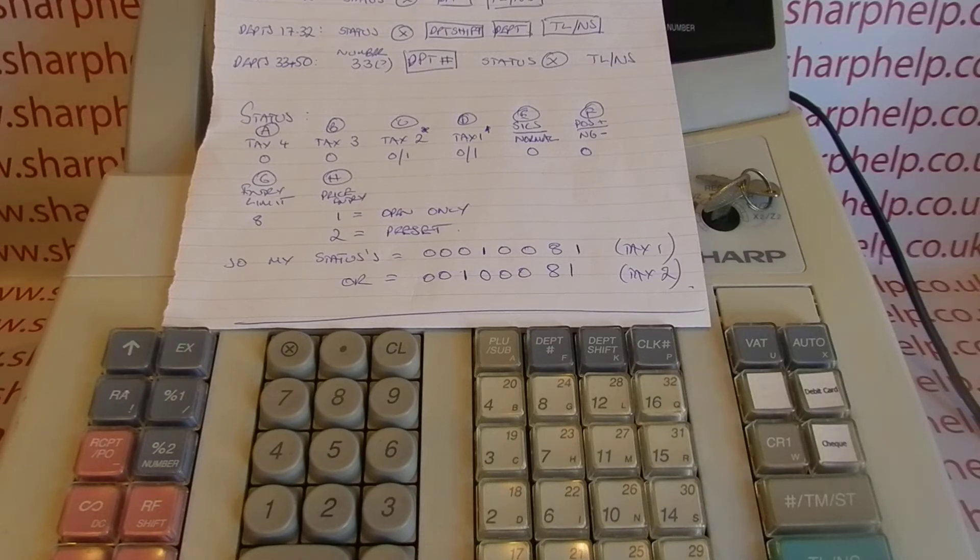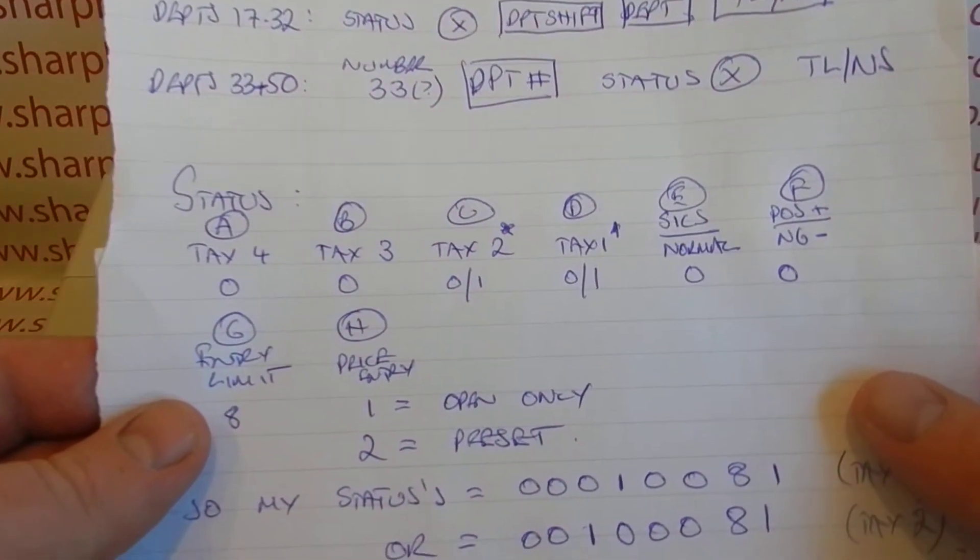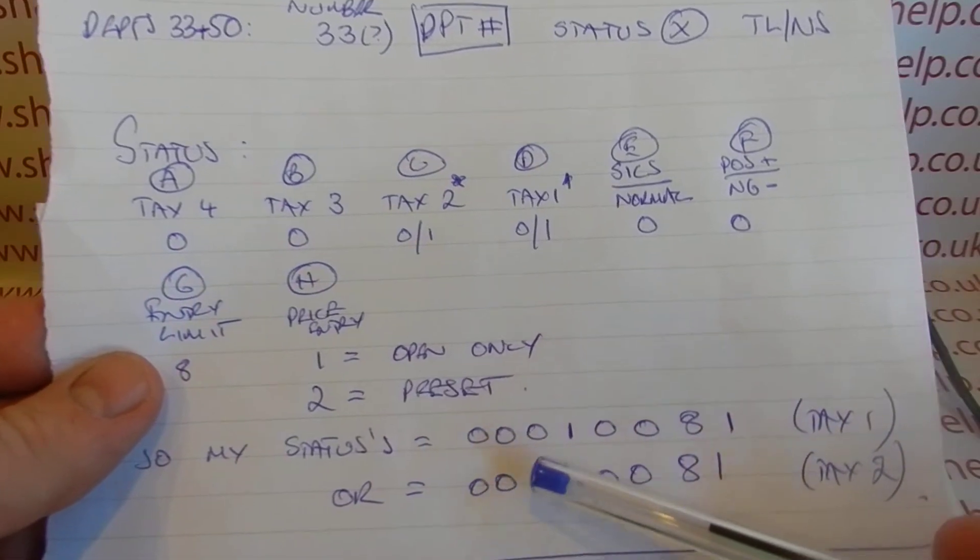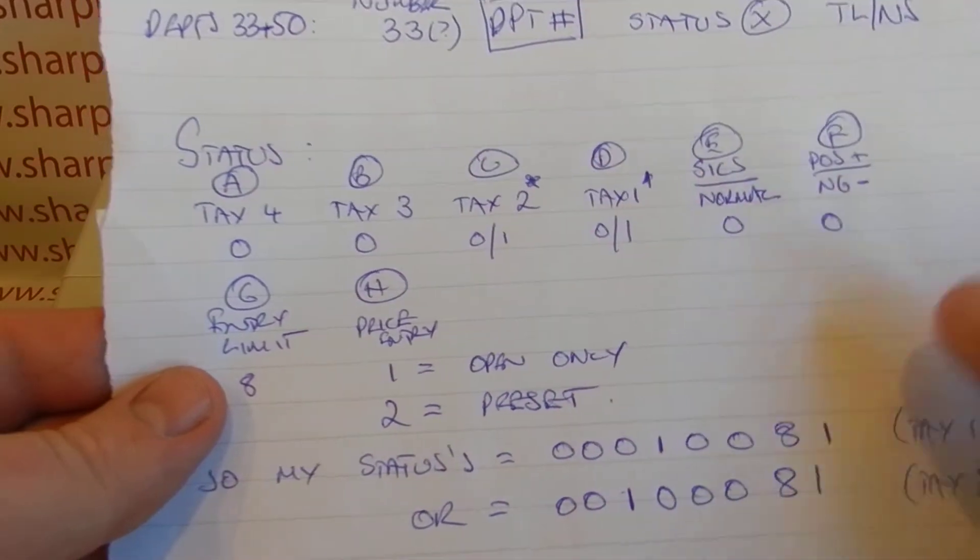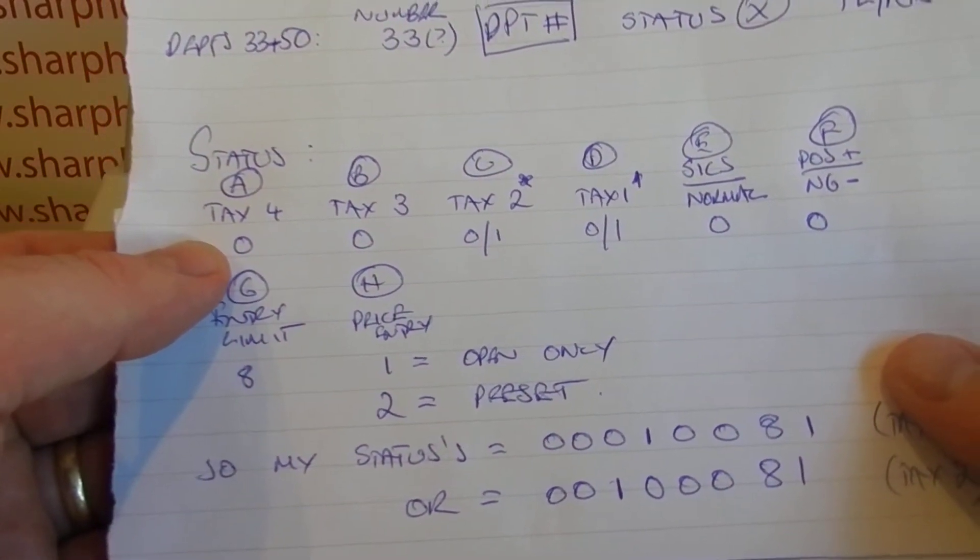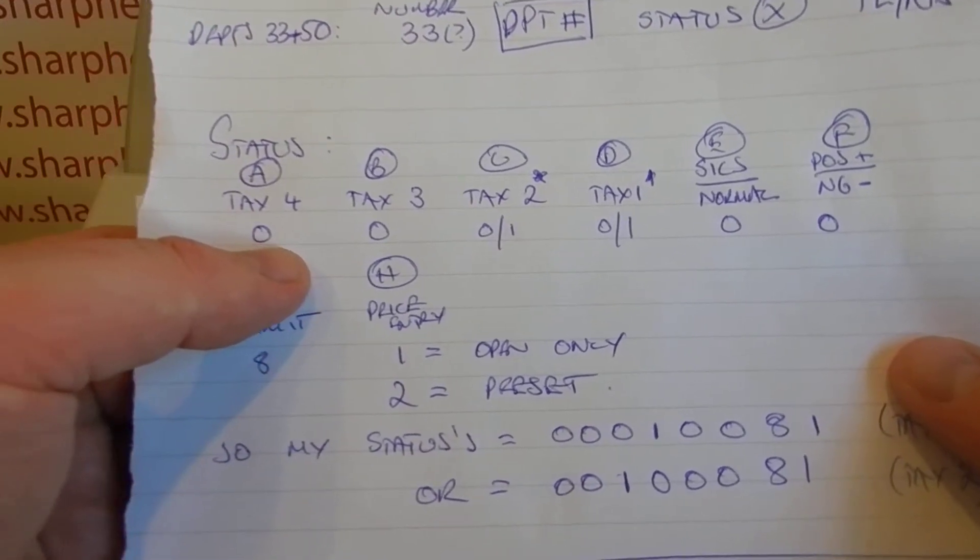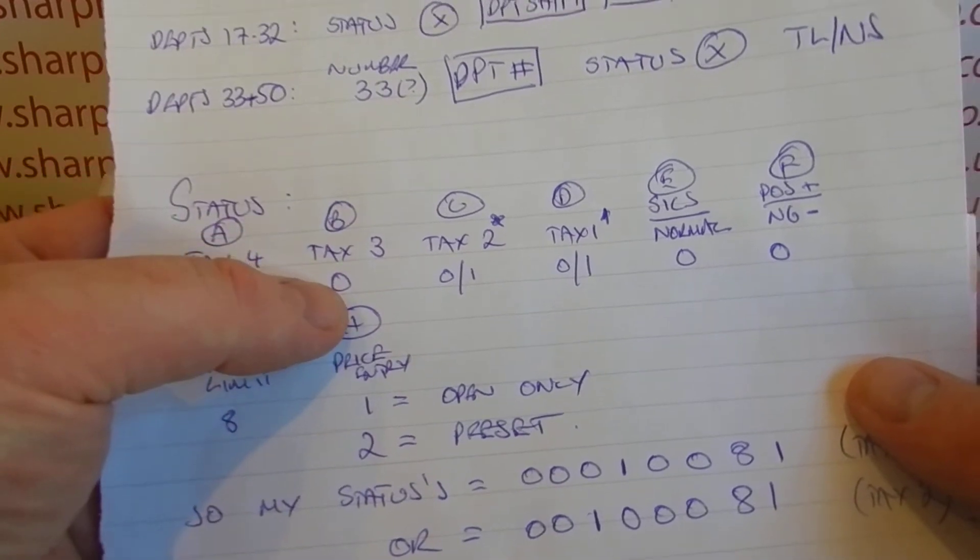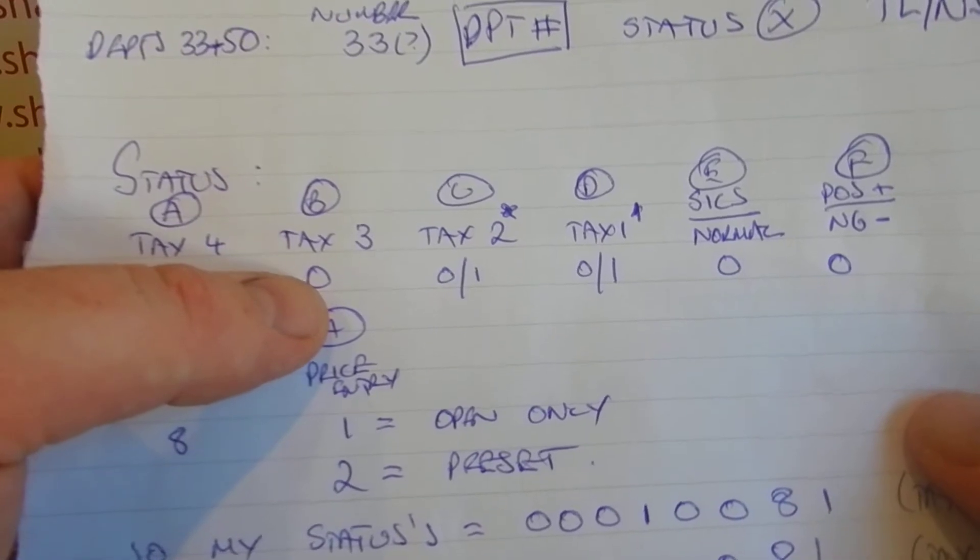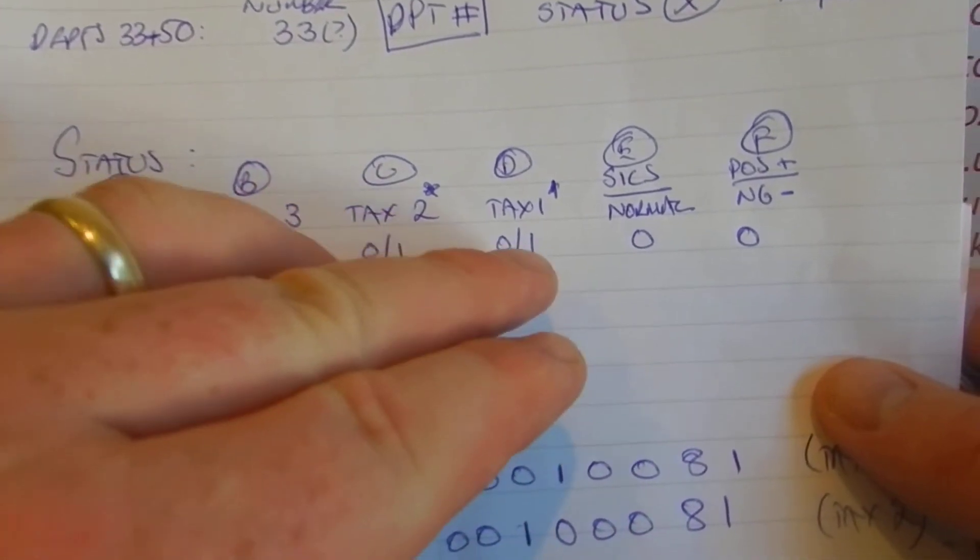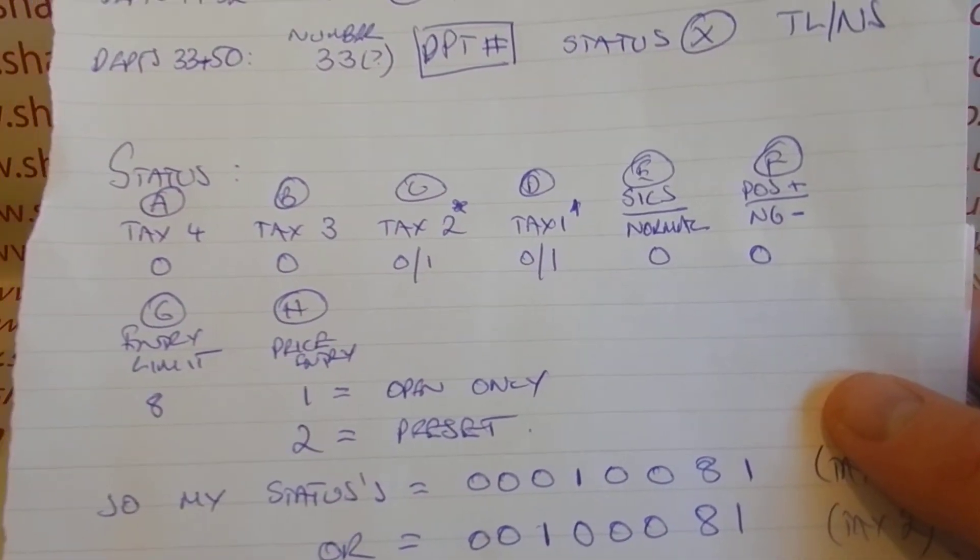I'm going to try and break it down and make it simple, which is what I've tried to do here. The eight digits you enter—mine are going to end up like this. Digit A, the first digit, is relating to tax rate 4. So if you want tax rate 4 to apply to the department that you're programming, you would set that to 1. I don't, so mine's at 0. It's the same for B, which is tax rate 3. You set it to 0 if you don't want tax rate 3 to apply to that department, or 1 if you do. Because my machine's got two tax rates on it, these ones are marked as optional, so it makes it easy for me when I come to do my programming.